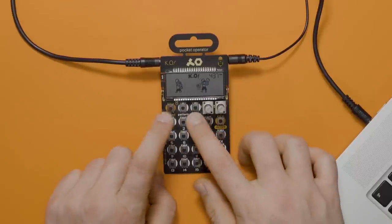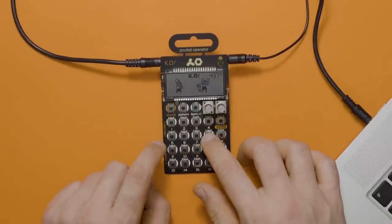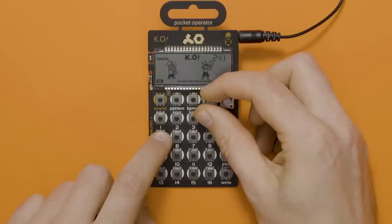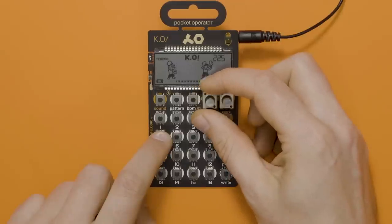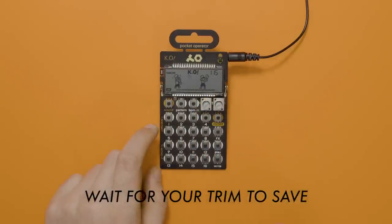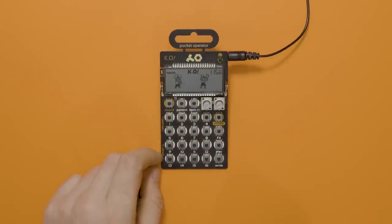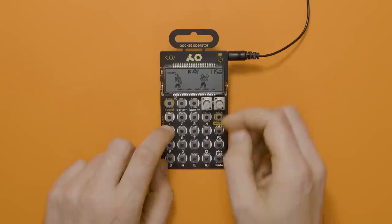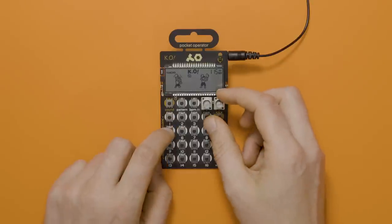We can see that the slices aren't perfect, but we can spend a moment adjusting the trim points. Adjust the start and end points of each sample in the trim menu using knobs A and B. Pro tip: remember to wait five seconds after you adjust the trim point to save the adjustment. After a bit of time, we'll have our slices just how we want them. But this process can be a bit time consuming.